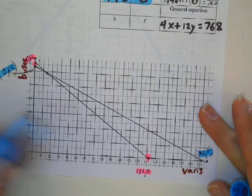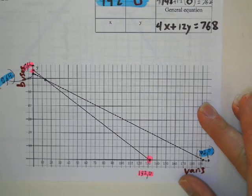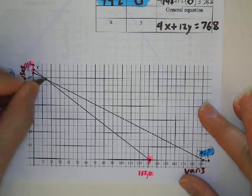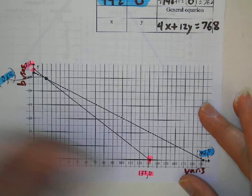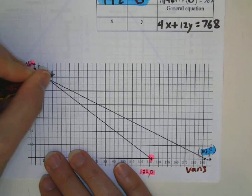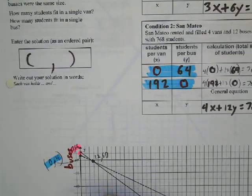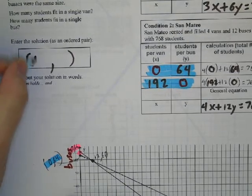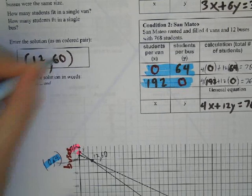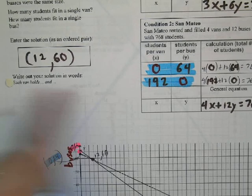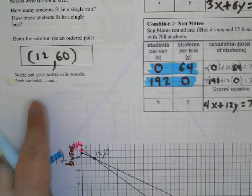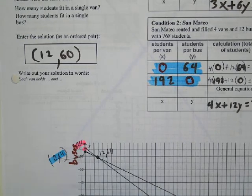And this intersection that you found on Desmos, when you typed in the equation in Desmos, you got 12 comma 60. So your ordered pair, you should write 12 comma 60.